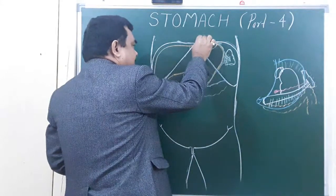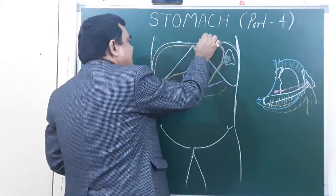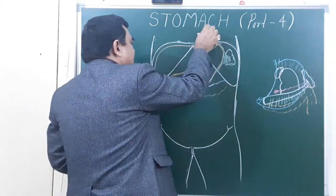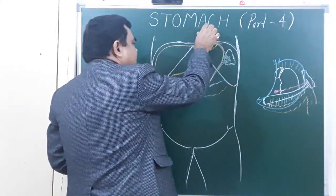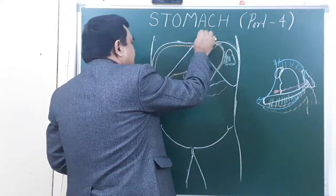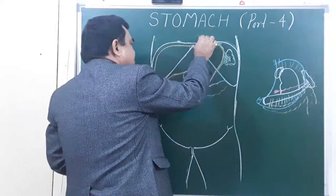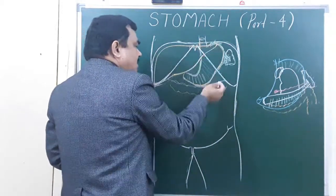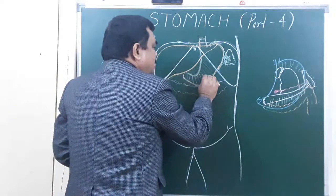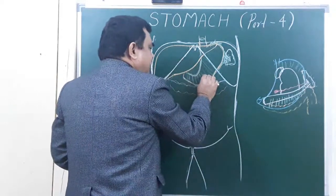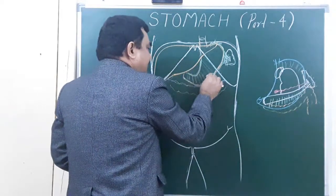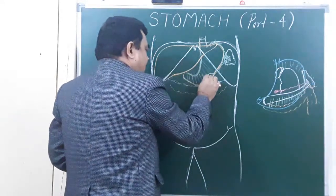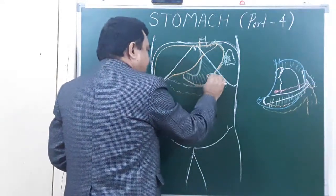In atresia, in case of injury, when there is obstruction, then a tube is inserted here directly into the stomach.